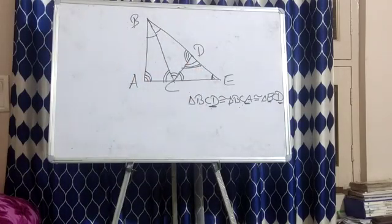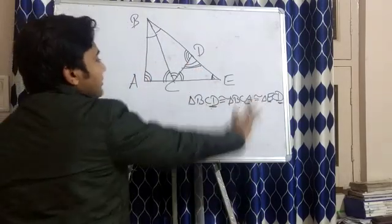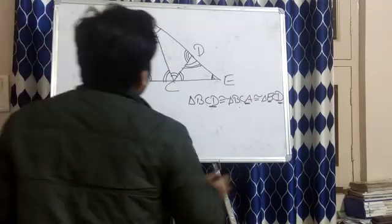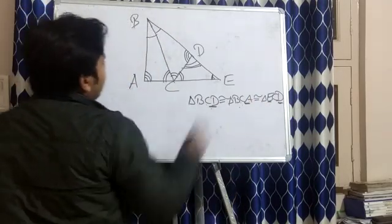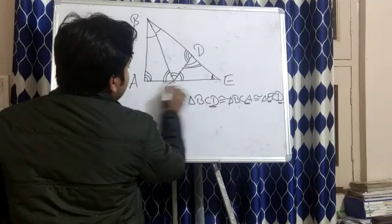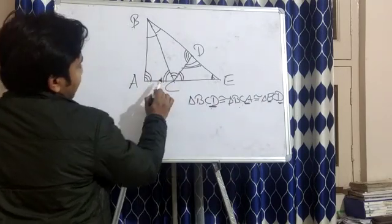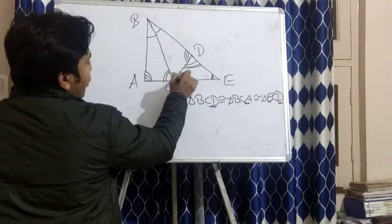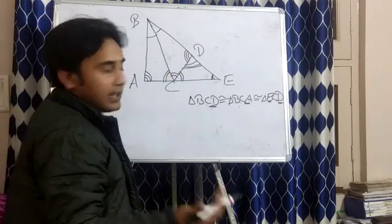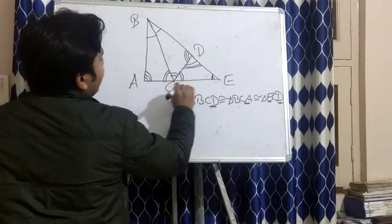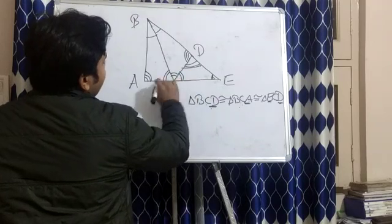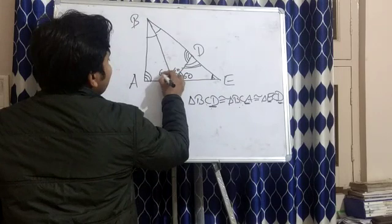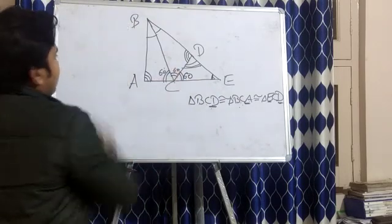This is the information we have gathered from the congruencies. Now, since the angles along the straight line have three equal components, and all three are equal, each one of them will be 60 degrees.